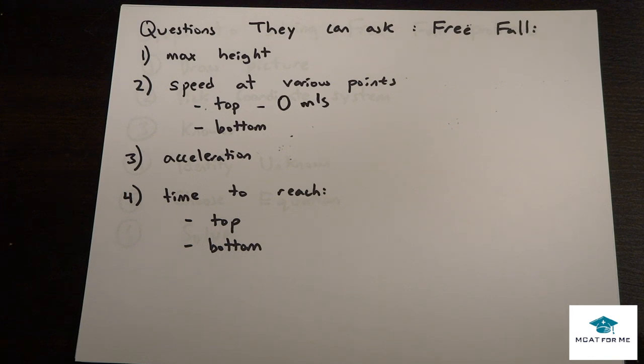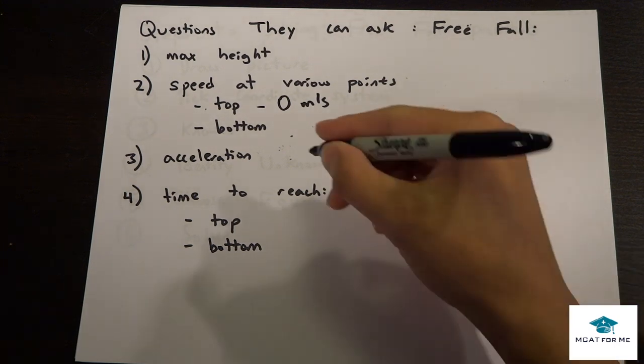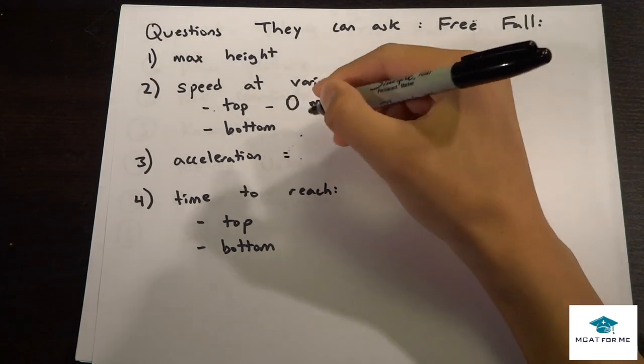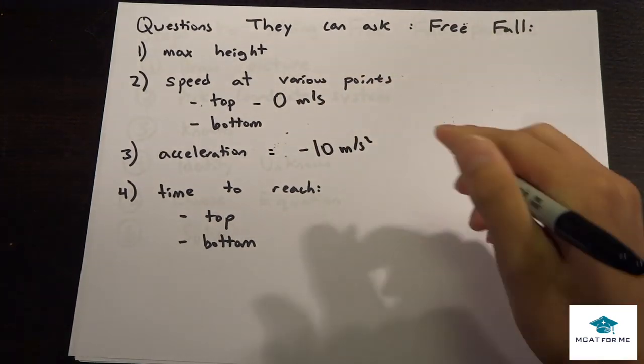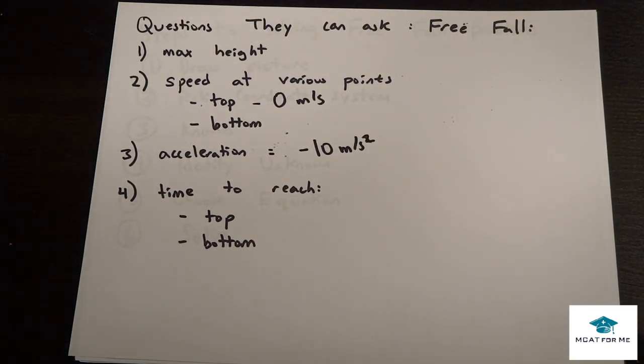The next one is acceleration. Acceleration is nothing that we can calculate, this is a constant. This is negative 10 meters per second squared. You might have learned it as 9.81 or 9.8, something like that, but without a calculator it's negative 10. Just round it off to negative 10 and you'll be fine.